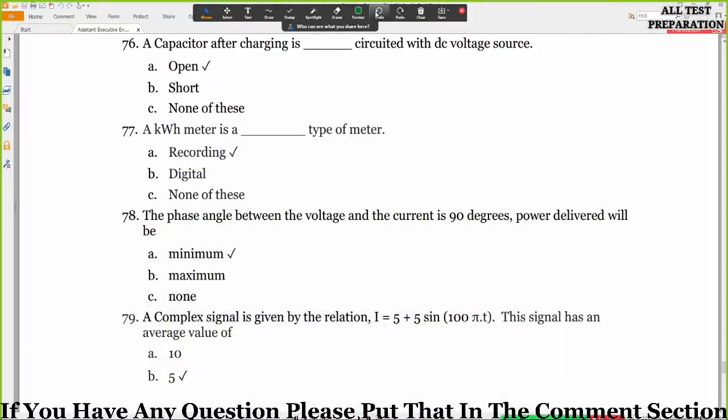Hello everyone, welcome back to another tutorial of past paper assistant EXAT engineer FBHC. Last time we covered question 75, so we have 76 to do. A capacitor after charging is open circuited with DC voltage source. So a capacitor after charging is open circuited with DC voltage also. This will be the correct option.